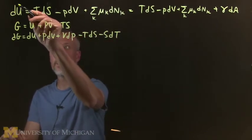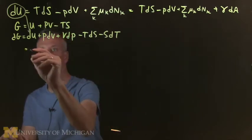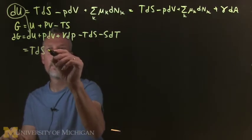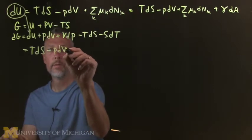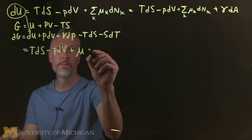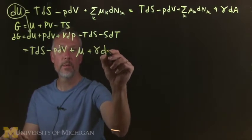Put in all the terms and then substitute what we know dU is into here, which is all this stuff. So that's TdS minus PdV, plus the mu stuff which I'm just going to call mu as I've done before, plus the important term gamma dA.